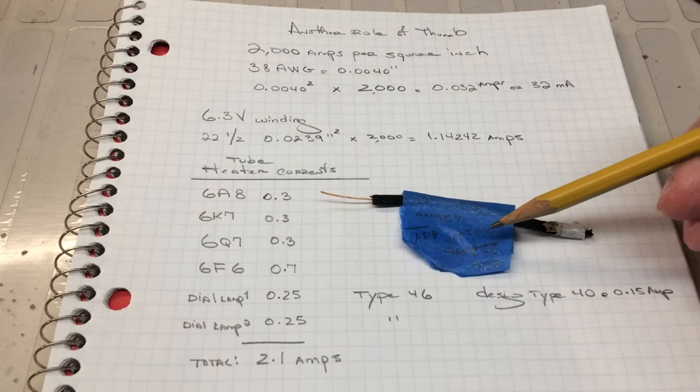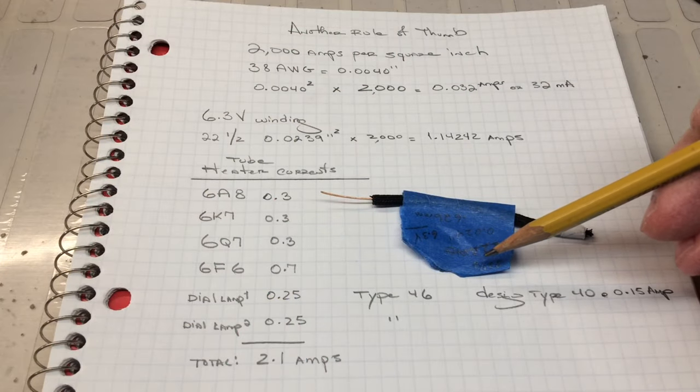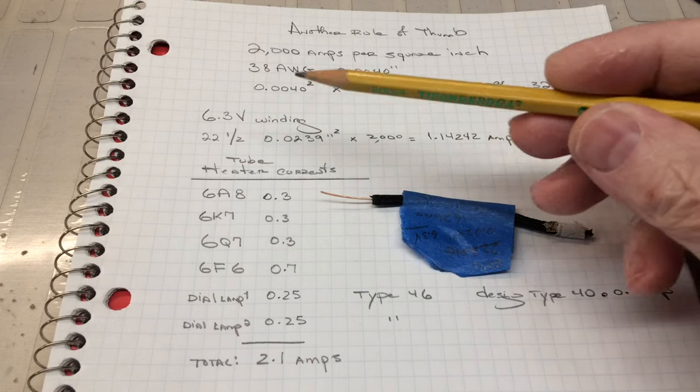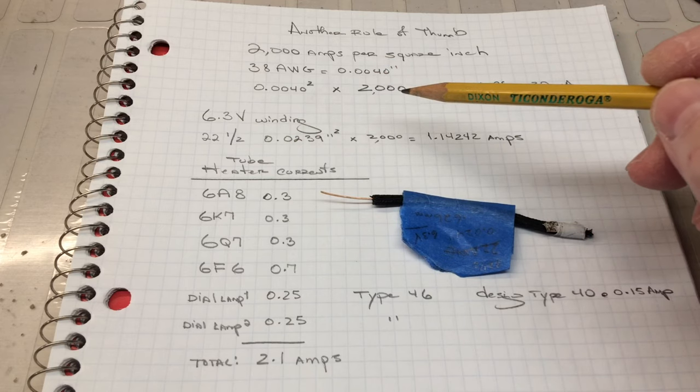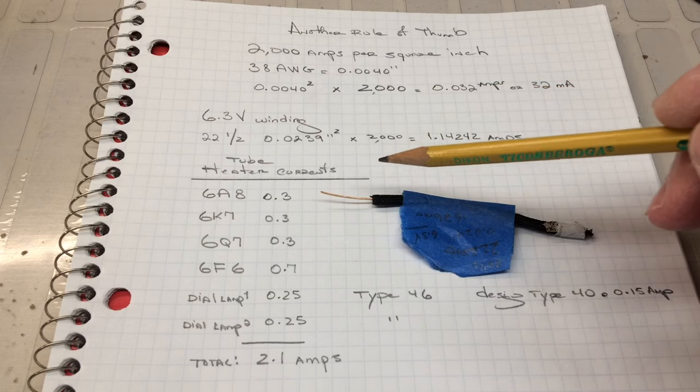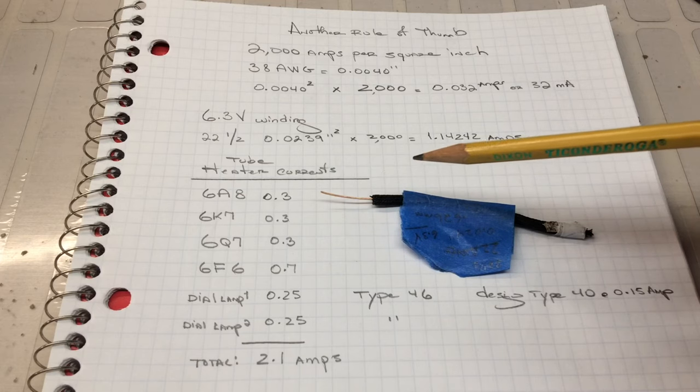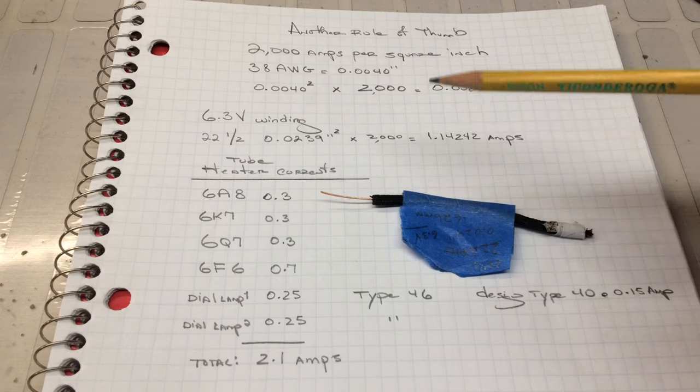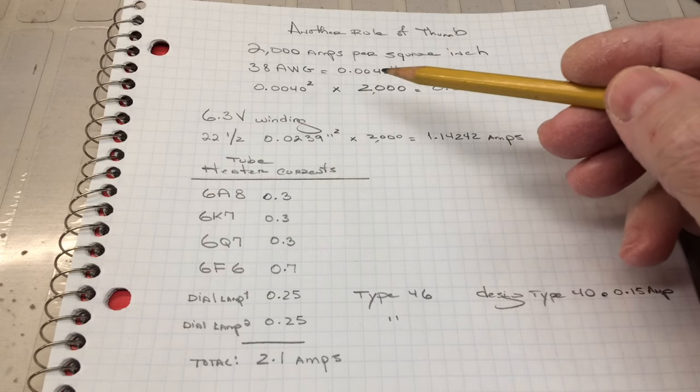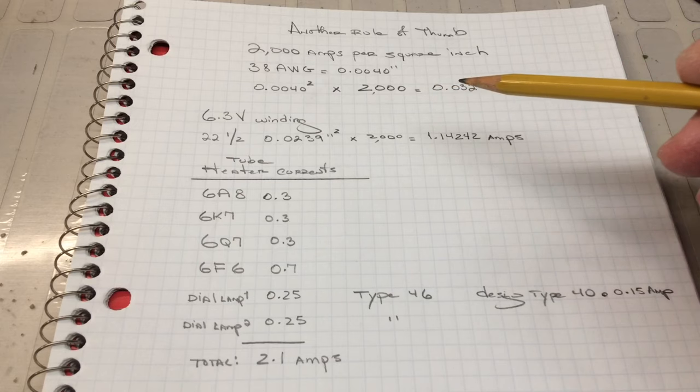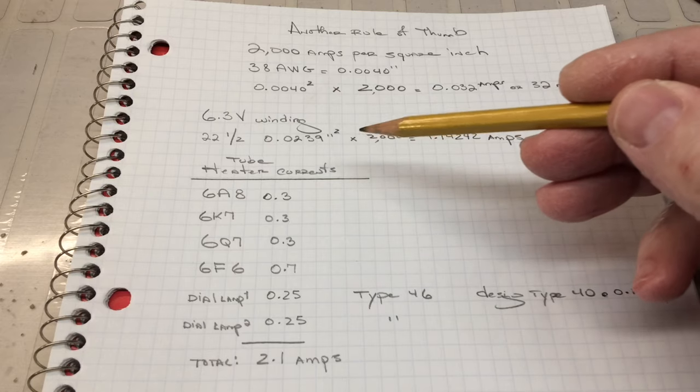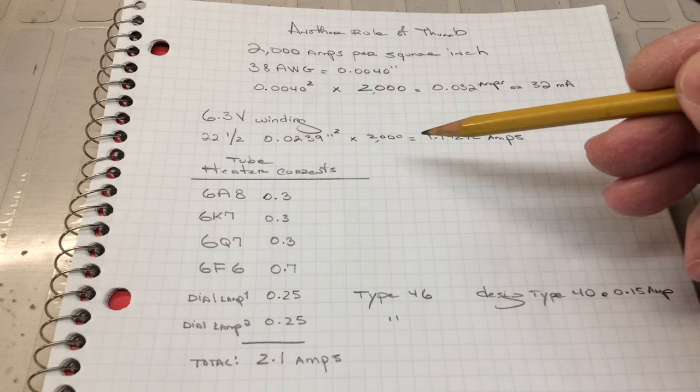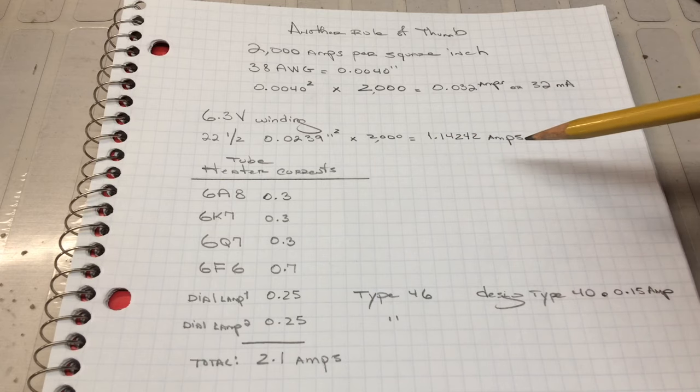So a sample of the wire used for the 6.3V winding with the insulation removed comes back to a 22.5 gauge. So I'm betting the transformer itself back in the day all the wire used was probably referenced back to the standard wire gauge. You can see if we do that same math that we did above for 2,000 amps per square inch, we come back to a max capacity for this particular wire gauge used in the 6.3V winding to about 1.14 amps.